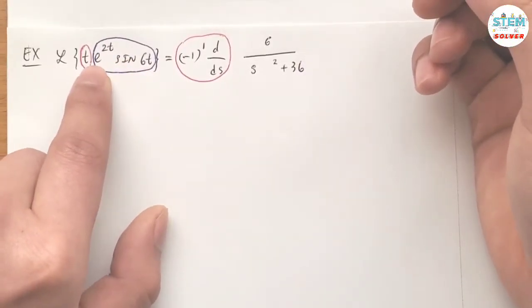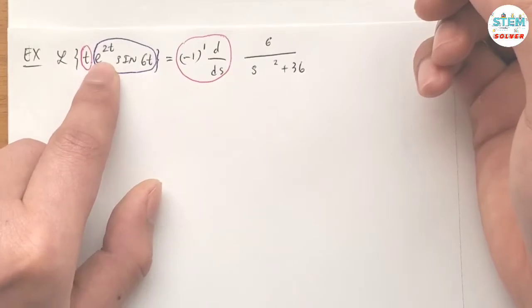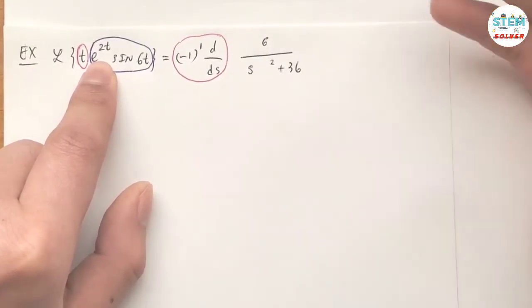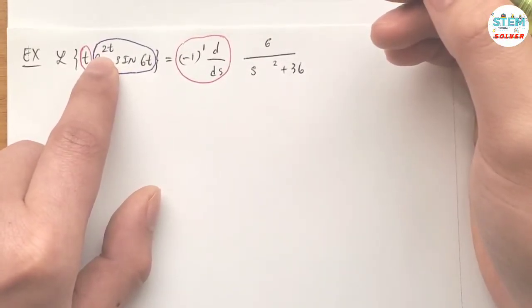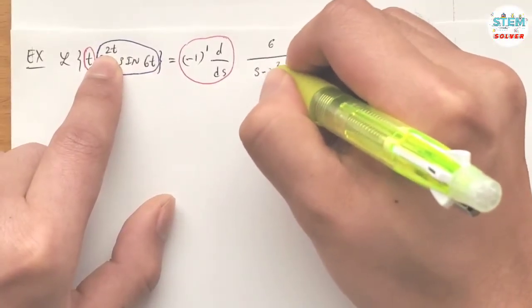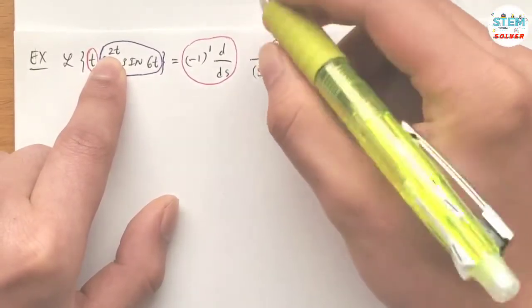But we do have e to the 2t, so this means that we have a shift, right, the shift is 2, so we have s minus 2.